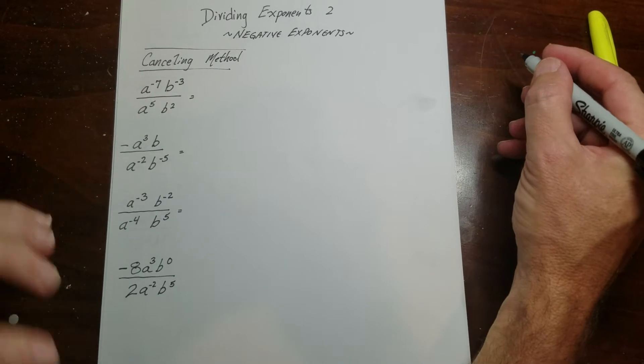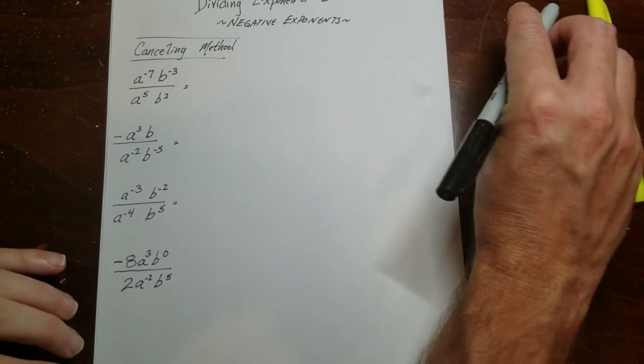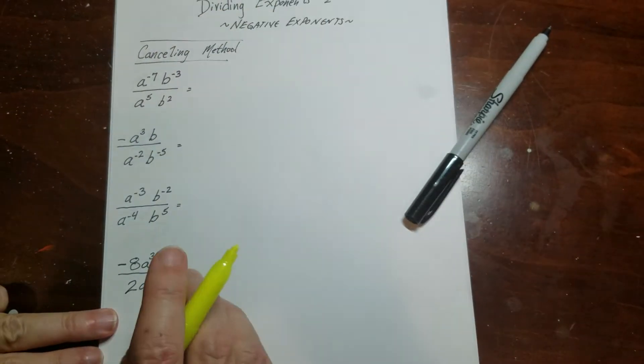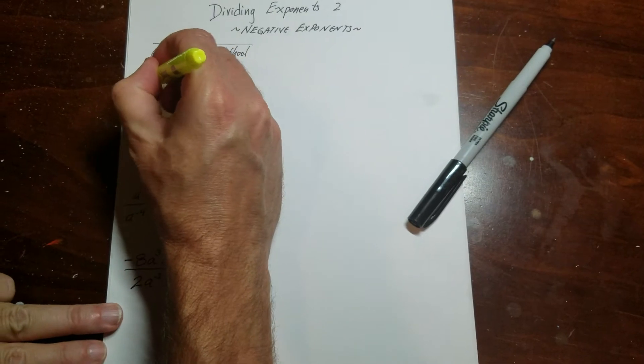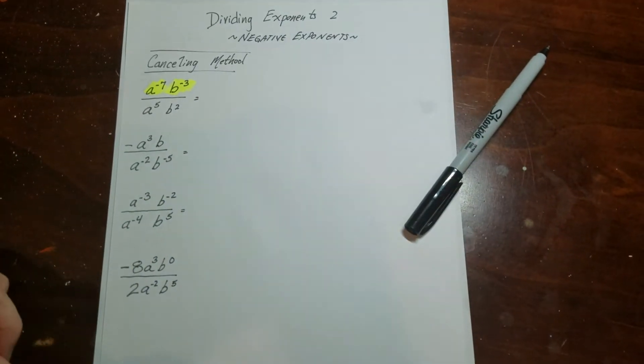So there's actually two ways to look at this. I'm going to do the canceling method. So one thing that I'll do is I'll actually rewrite the expression. So if you look, this term here has a negative on it, and this term here has a negative on it.